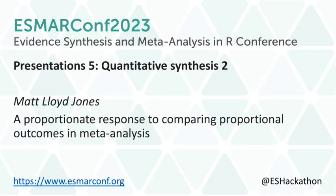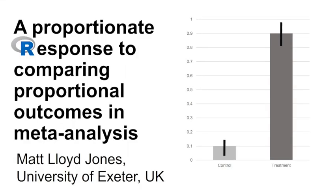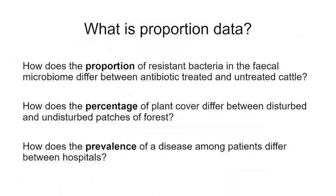Thanks very much, James and Megha. Next, we have Matt Lloyd-Jones, who's going to be talking about a proportionate response to comparing proportional outcomes in meta-analysis. My name is Matt Lloyd-Jones, and today I'll be talking about some ways of dealing with proportion data in meta-analysis. Proportion data is simply data presented as parts of a whole — proportions, percentages, or prevalences — limited to a 0–1 or 0–100% range. One example research question: how does the proportion of resistant bacteria in the faecal microbiome differ between antibiotic-treated and untreated cattle?